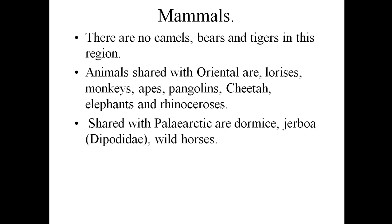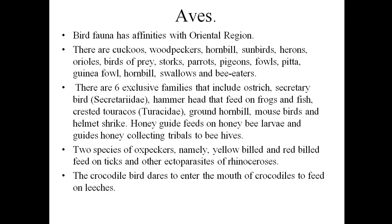Talking about the mammals, there are no camels here, but bears and tigers are seen. This realm shares many animals with the Oriental realm — for example, lorises, monkeys, apes, pangolins, cheetahs, elephants, and rhinoceros. These are major animals of the Oriental realm's fauna as well, but the same are also found in the African region, mainly the larger ones. Even jerboas and wild horses are also found here.